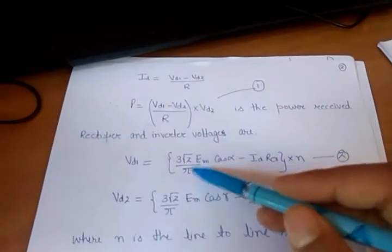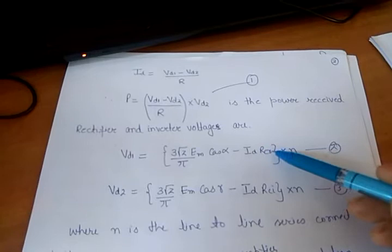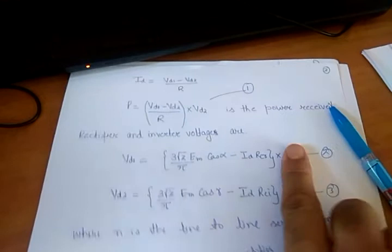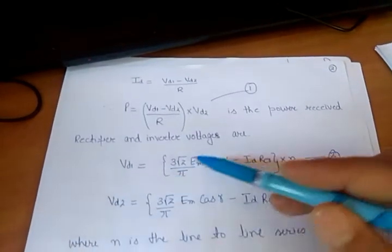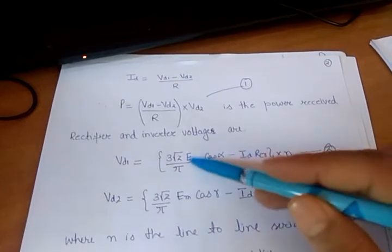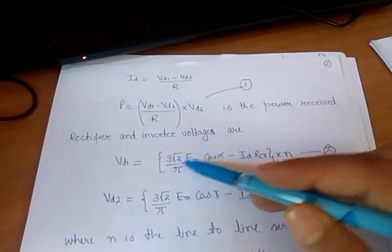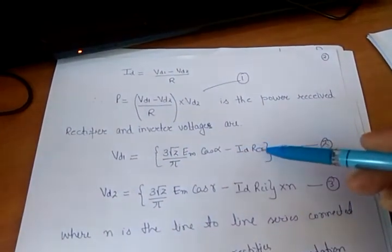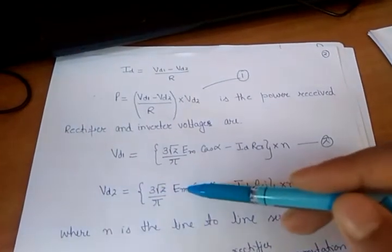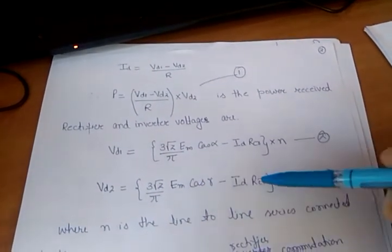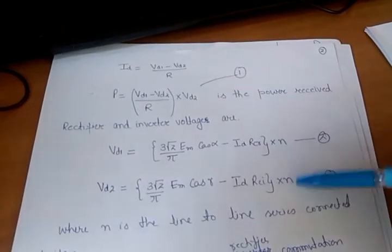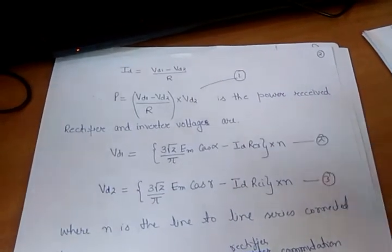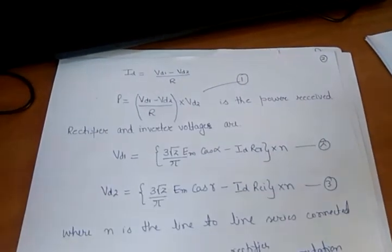Vd1 equals 3√2 em upon pi times cos alpha minus ID times Rcr, where em is the RMS value. Vd2 equals 3√2 upon pi times em times cos gamma minus ID times Rci. The n in the equation refers to the number of line-to-line series connected bridges.